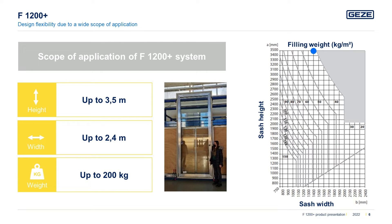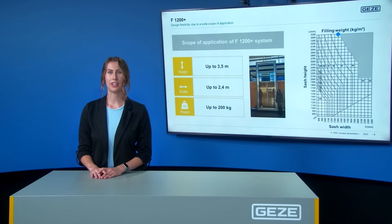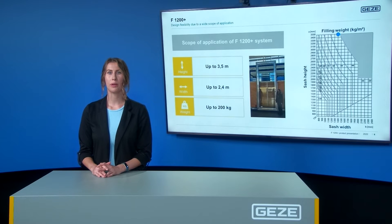Based on this size comparison, you can see how large the window elements can be when equipped with the F1200 Plus system. These window sizes have the advantage of generating large ventilation areas as well as a high amount of daylight. Maybe you have experienced opening a tilt window at home when it is slightly windy — it cannot be done without some effort. Now imagine closing a window in the dimensions shown here. I believe this would be relatively difficult, and this is where our powerful F1200 Plus window drive comes into play.